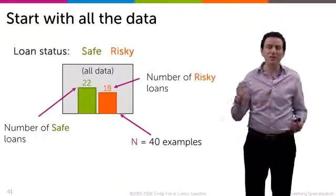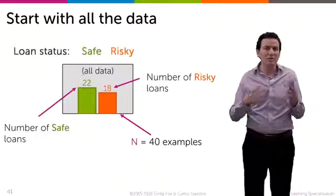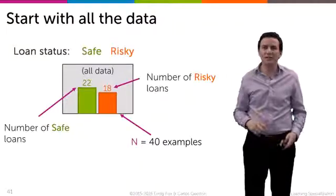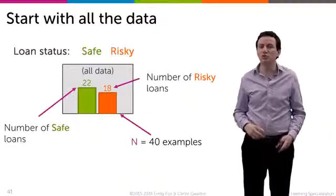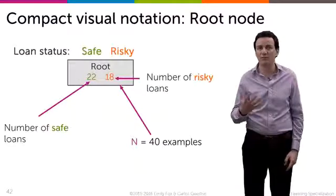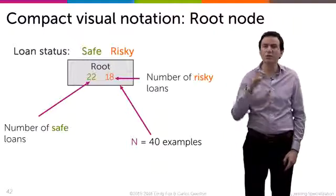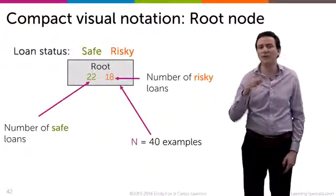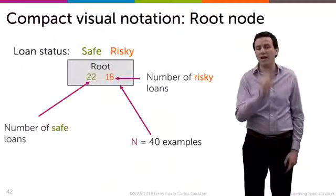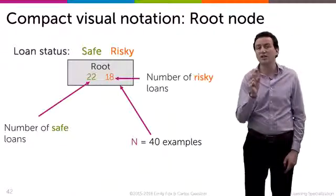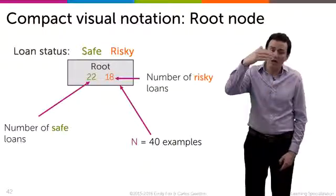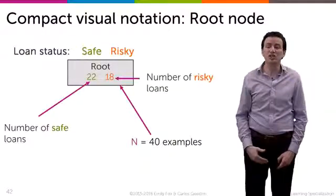Now I have a histogram, but as we're building these figures they can get really big and complicated, so we're going to compress it a little bit. Instead of showing the histogram and the numbers 22 and 18, I'm just going to show you the numbers 22 and 18 to simplify the visualization. So when you see that root node, you should interpret it as: we have 40 data points, 22 are green (safe loans), 18 are orange (risky loans). And starting from there, how do we go and build that decision stump?